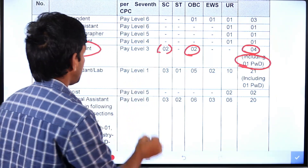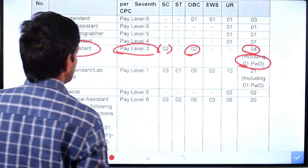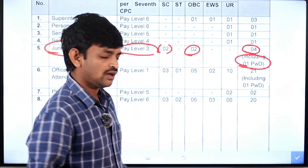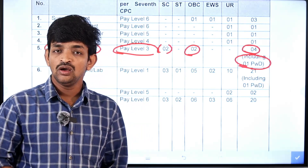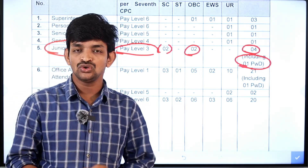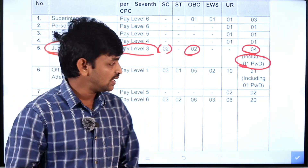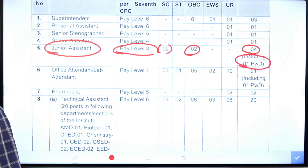The Junior Assistant post is at the highest salary for Pay Level 3. The salary is approximately 20,000 rupees. This is the Junior Assistant post.